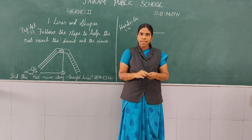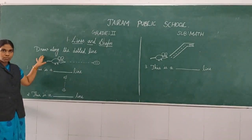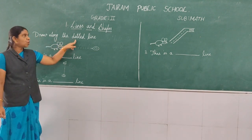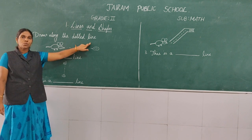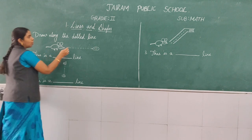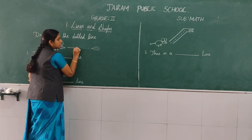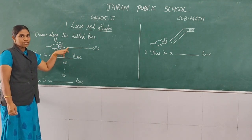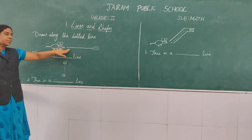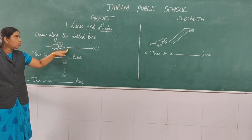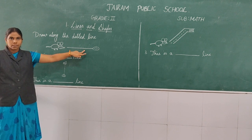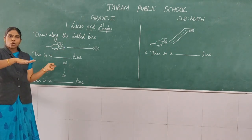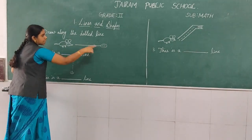Okay children, see page number 2. After the hands-on activity, we have this picture. Draw along with the dotted lines. Now everyone take pencil. Trace this line, children. The rat is going to eat the biscuit — take pencil and trace this line. I have traced; everyone trace, children. Very good. This line is in a sleeping position — we saw it in the hands-on activity. The line is in sleeping position, so we call it a sleeping line.